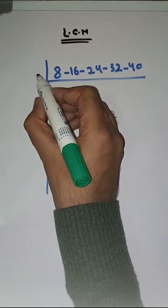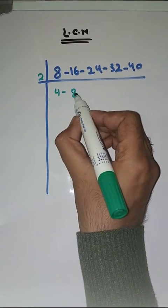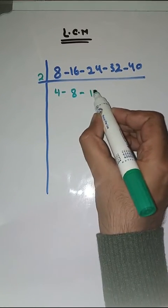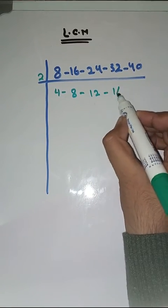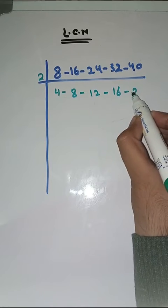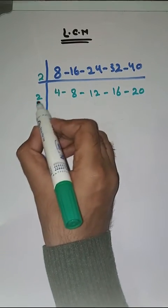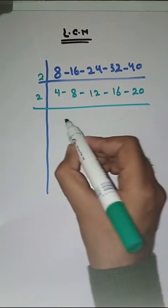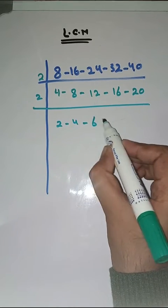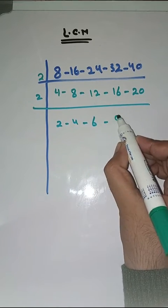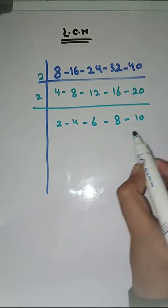We start with 2. 2 4s are 8, 2 8s are 16, 2 1s are 2, 2 2s are 4, 2 16s are 32, 2 20s are 40. Again with 2: 2 2s are 4, 2 4s are 8, 2 6s are 12, 2 8s are 16, 2 10s are 20.